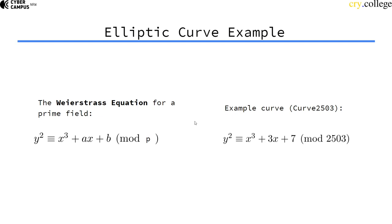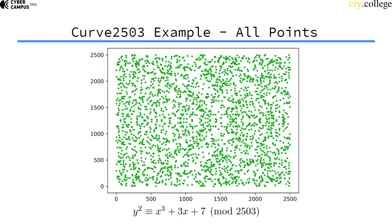So an example curve could be this equation here modulo 2503. This is a toy example because the modulus is of course too small for use in cryptography.